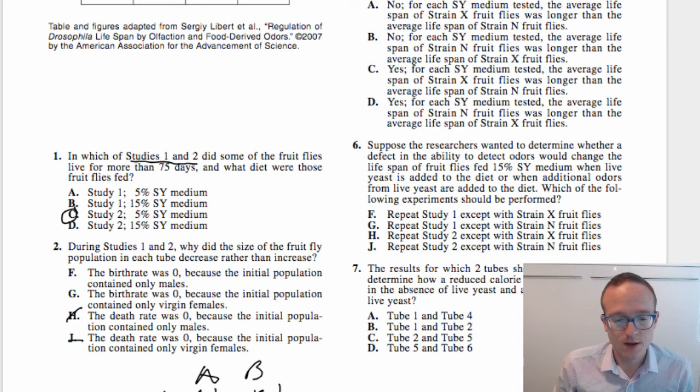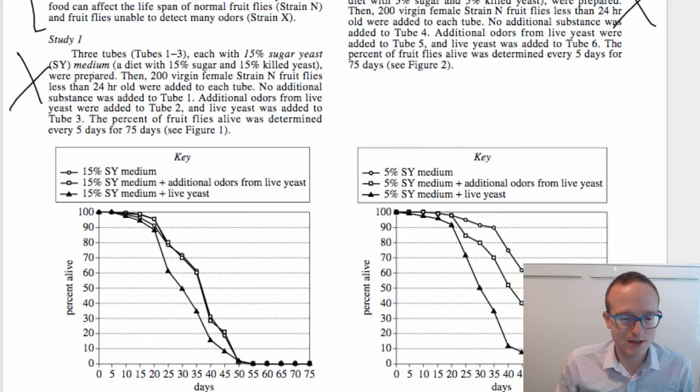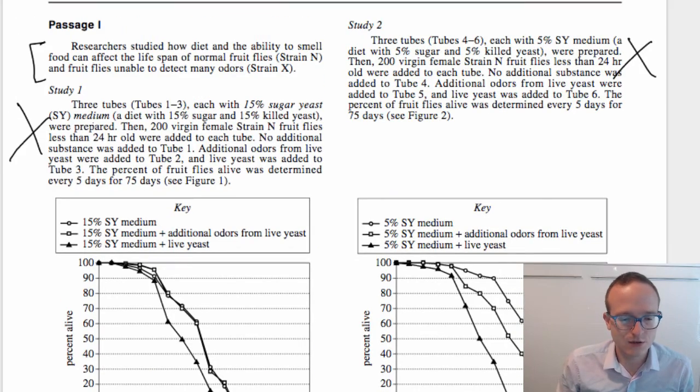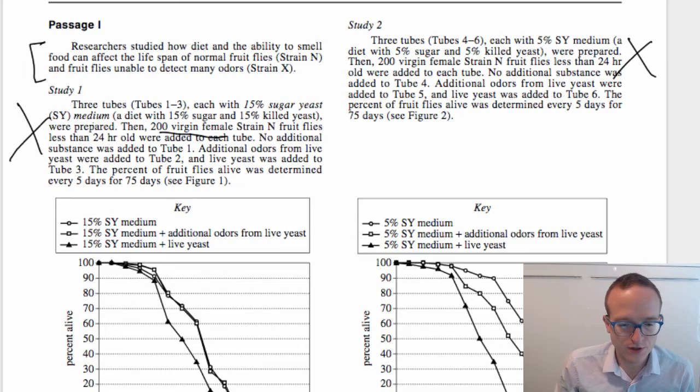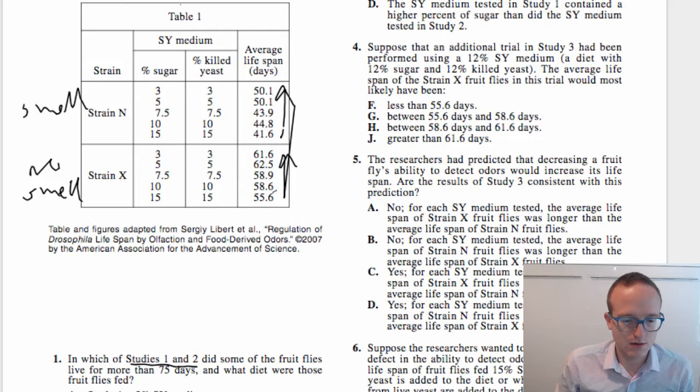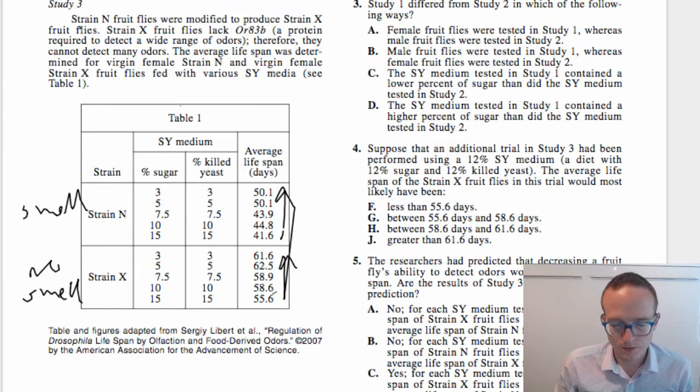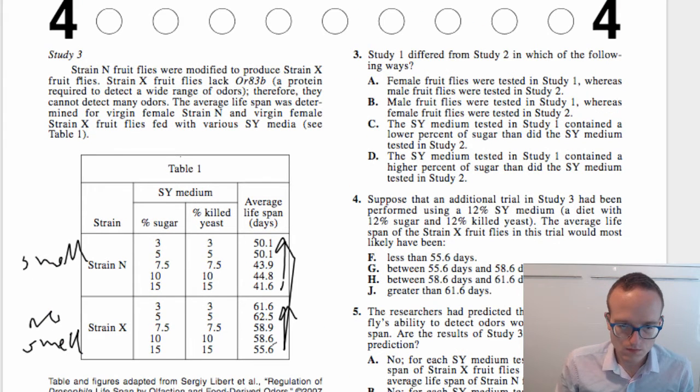Now, is it because the initial population contains only males or females? This is where we actually have to go back and see if we can spot this in the description of the experiment. So three tubes, blah blah blah, then 200 virgin female strain N flies. So we're using virgin females rather than males. They're virgins so you can keep the birth rate zero.